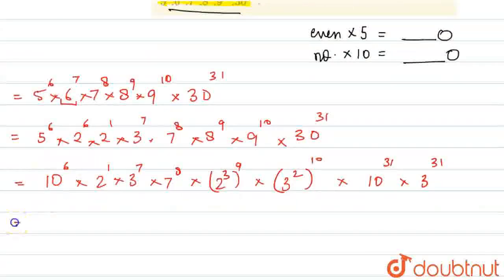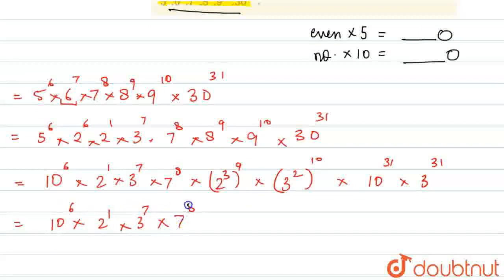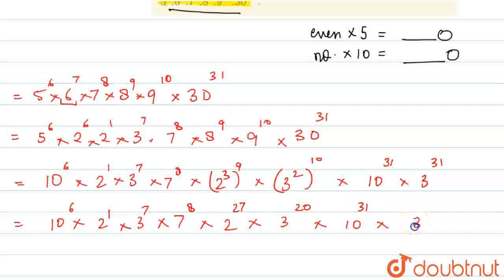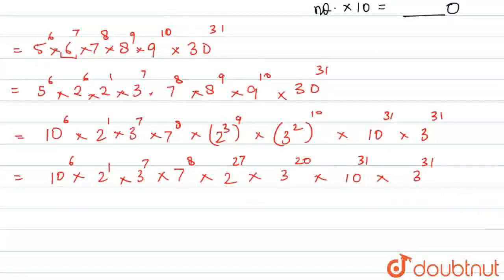Now we get this equals 10 to the power 6, into 2 to the power 1, into 3 to the power 7, into 7 to the power 8, into 2 to the power 27, into 3 to the power 20, into 10 to the power 31, into 3 to the power 31. Now solving this, we get equals to 10 to the power... 31 plus 6...